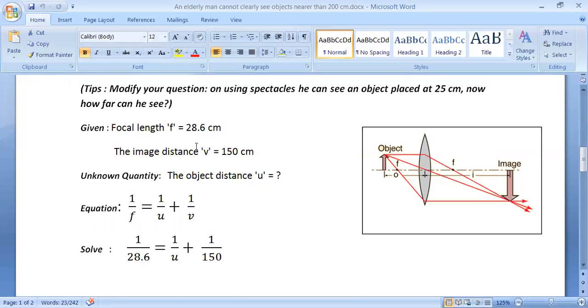Using the acronym GUESS, the given quantity is the image distance V equals 150 centimeters. The focal length that we obtained from the previous portion of the question is 28.6 centimeters. Now we're asked to find the object distance U. We'll be using the equation: 1/f = 1/u + 1/v.